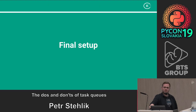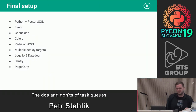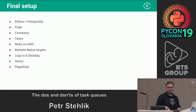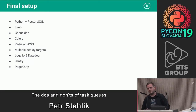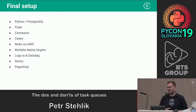We managed, we used Celery, and it works — that's the most important part. The final setup we are working with in Kiwi for Fantozzi: Python and PostgreSQL as a base, Flask and Connexion together with Celery and Redis as broker. We use multiple deploy targets in the CI pipeline. For monitoring we use LogsIO and Datadog. If something goes bad, we use Sentry for catching errors. If something goes really bad, we have PagerDuty and on-calls with proper scheduling across the finance tribe.